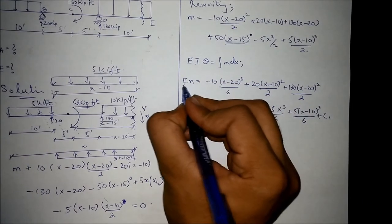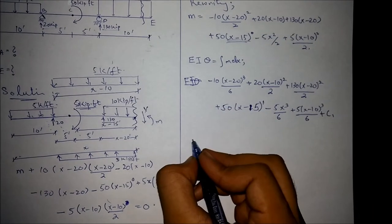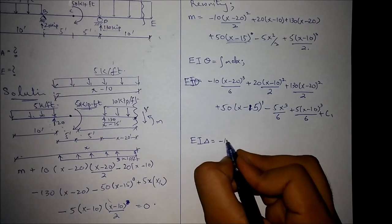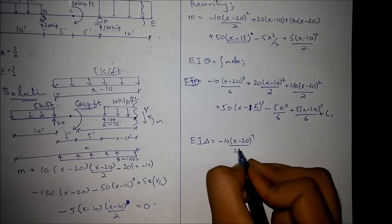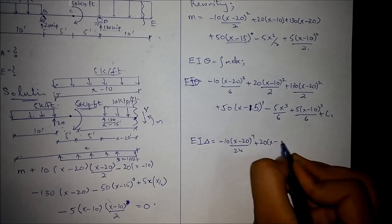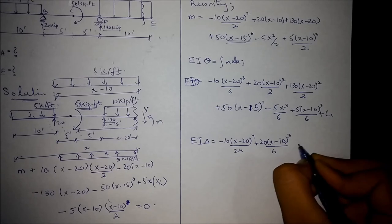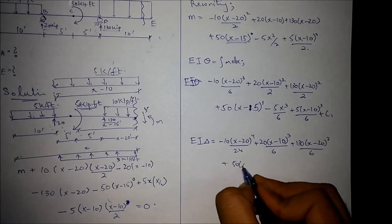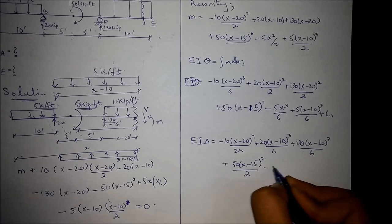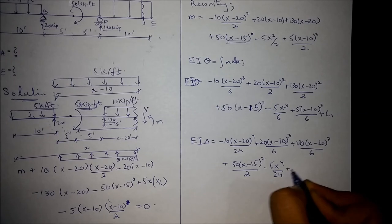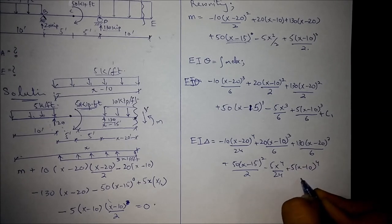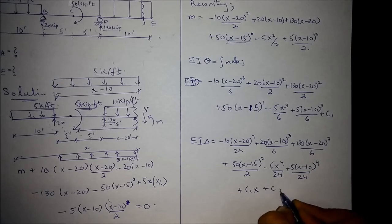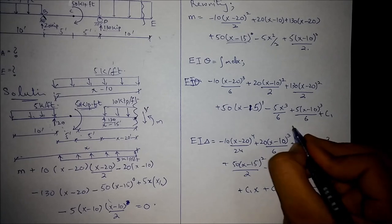Integrating the rotation equation a second time yields the deflection equation EI·δ: = −10(X−20)⁴/24 + 20(X−10)³/6 + 130(X−20)³/6 + 50(X−15)²/2 − 5X⁴/24 + 5(X−10)⁴/24 + C1·X + C2. This is labeled Equation 2, and the rotation equation is Equation 1.